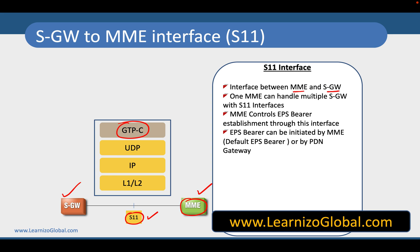S11 is the interface between the MME and the SGW. One MME can handle multiple SGWs with multiple S11 interfaces. The MME sends a command to the SGW for EPS bearer establishment, and the SGW is going to pass it on to the PGW. The PGW will do it with the help of PCRF and revert it back to the SGW, which then sends all the information back to the MME.